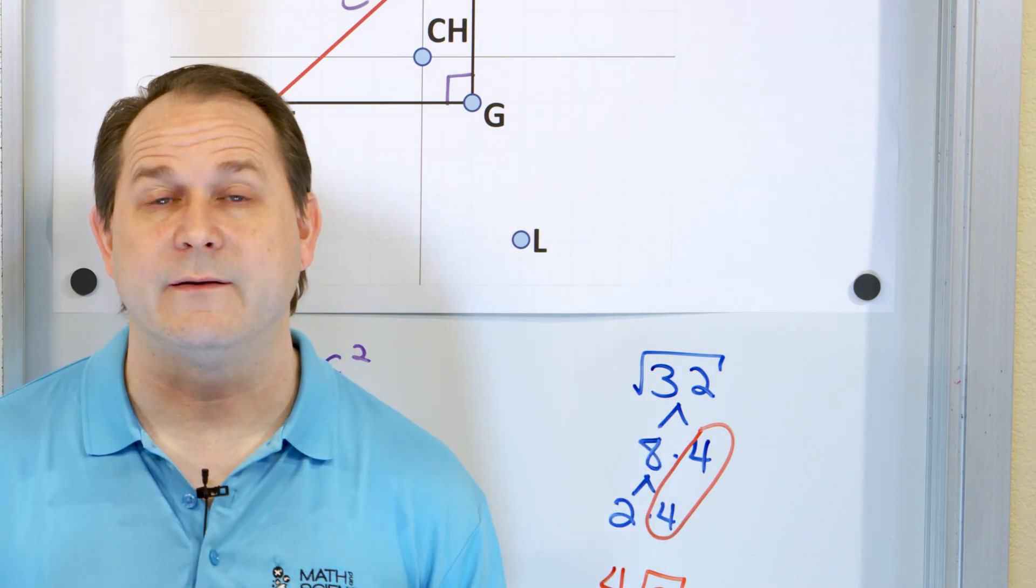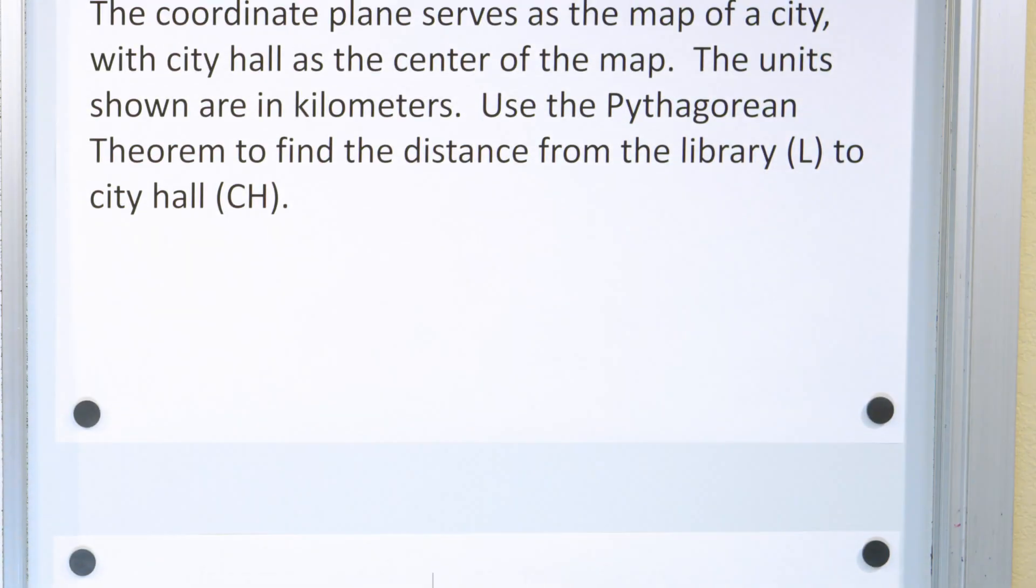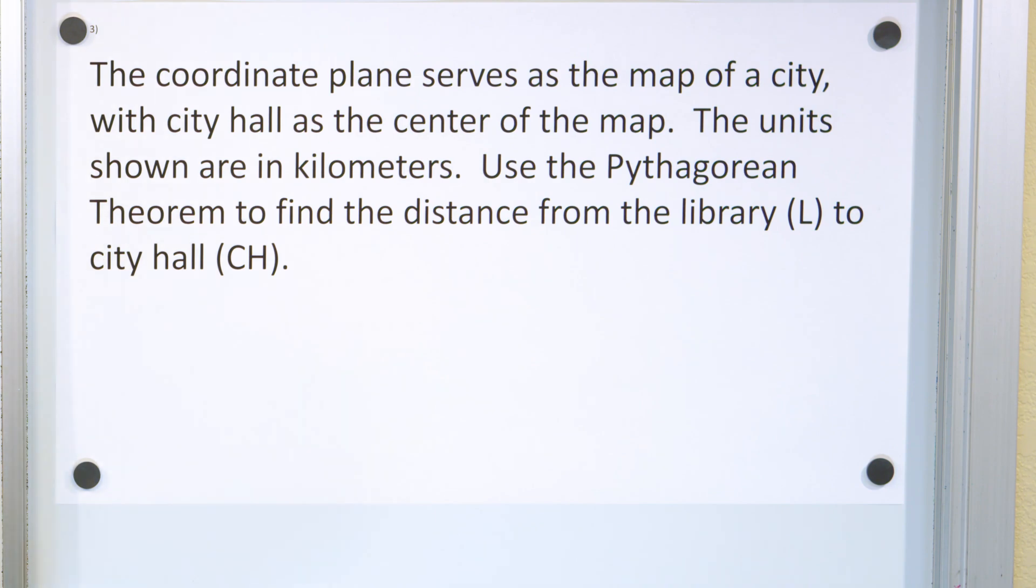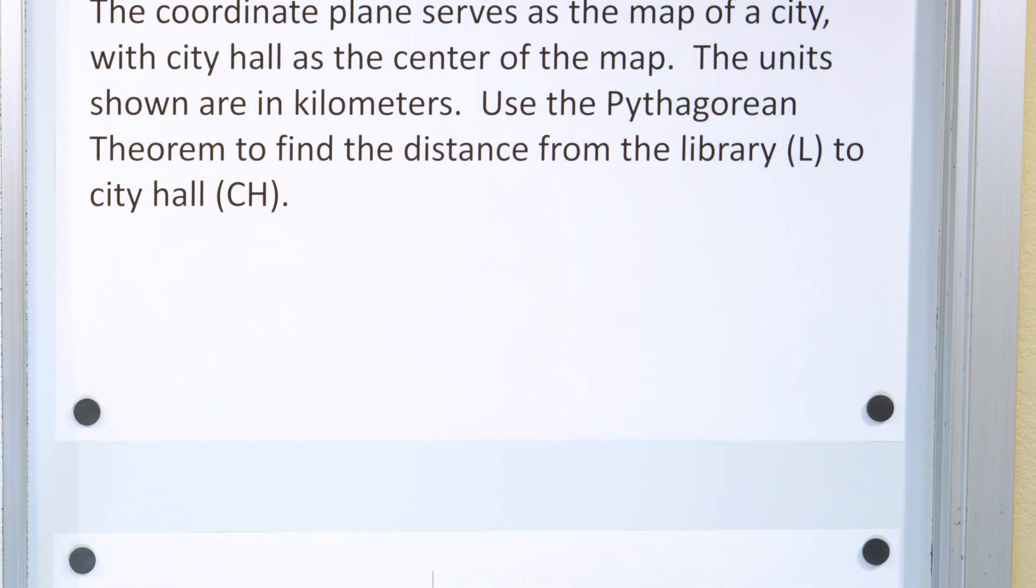Let me take this down and we'll do our next problem. All right, here is our last problem. Same story with the kilometers and the map. We're going to use the Pythagorean theorem to find the distance from the library L to the city hall.